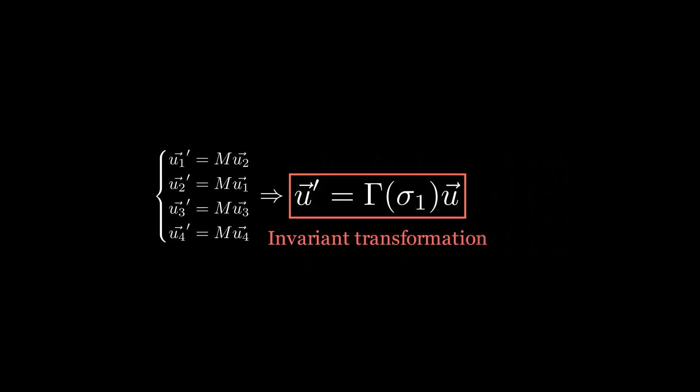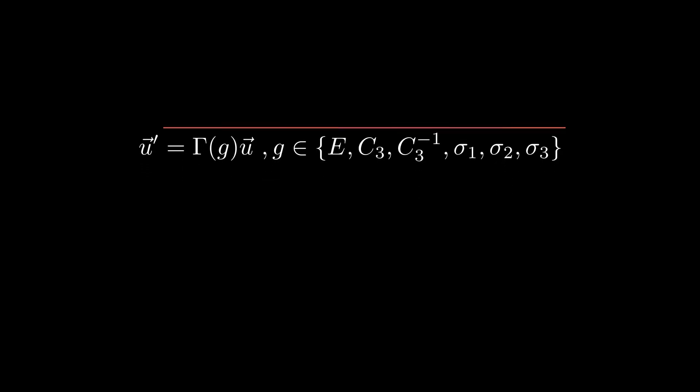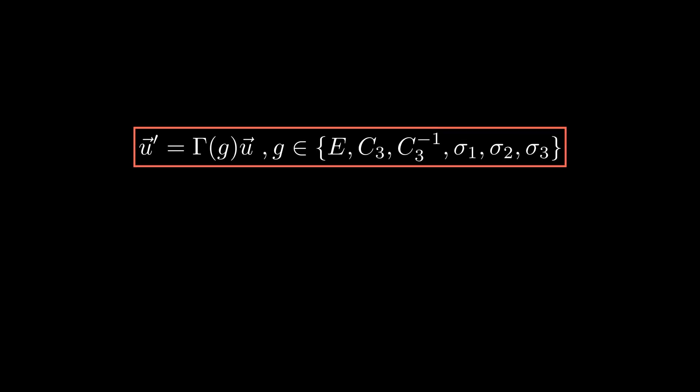To summarize, we found how to write the matrix of a 120 degrees rotation, and of a mirror on the x equals 0 plane. There are still other invariant transformations. Obviously, the identical transformation, where no change is done, the 120 degrees rotation but in the opposite direction, and two other mirror transformations. Using the gamma notation, we can write compactly these invariant transformations, and define now what invariant means in our problem.